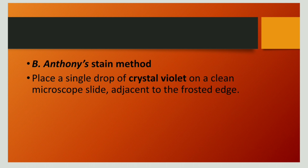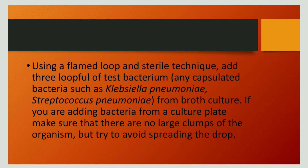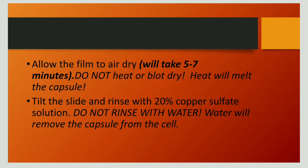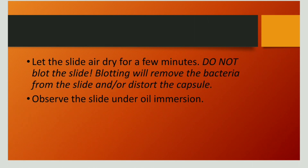Now we will discuss the next method of capsule staining, which is the Antony's staining method. In this method, a clean slide is taken and a drop of crystal violet is added to it. Using a flamed loop and sterile technique, take a loopful of bacteria — for example, Klebsiella pneumoniae — and spread it over the stain, mixing the bacterium with the stain. Allow the film to air dry, which may take 5 to 7 minutes. After that, rinse the slide with 20% copper sulfate solution. Do not rinse with water since water may remove the capsule. Let the slide air dry without blowing, then observe under oil immersion.